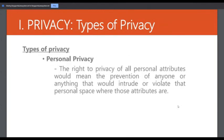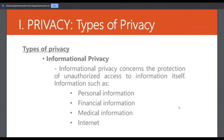One type of privacy is personal privacy, which refers to the right to privacy of all personal attributes — meaning the prevention of anyone or anything that would intrude or violate that personal space. Someone should not intrude or violate your personal space, and if someone does, you may lose your personal privacy.